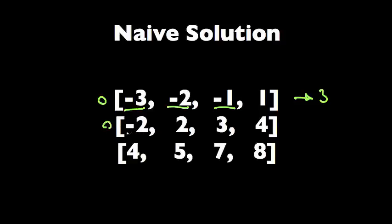In the second row we find just one negative number, and in the third row, the last row, we find zero negative numbers. So we add them up and we get four in this case.